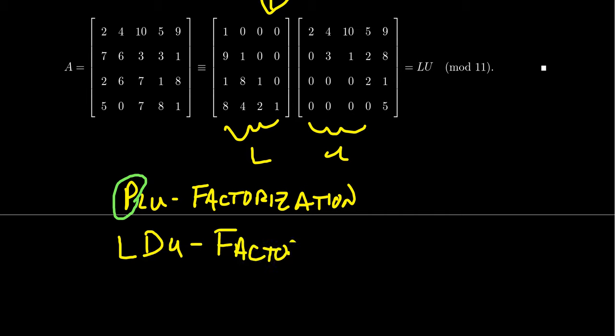it has L, which is a unit lower triangular matrix. It has U, which is going to be an echelon matrix, but it also has this matrix D in here, which is going to be a diagonal matrix. The diagonal matrix basically keeps all of the scaling together in terms of the row operations we did here,